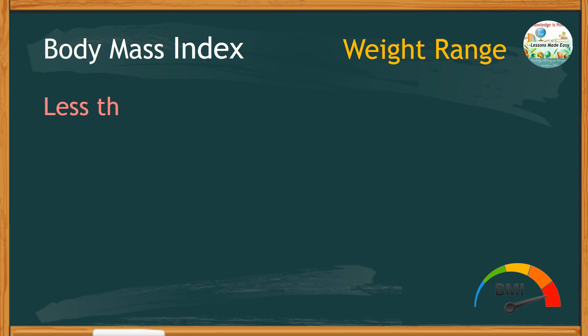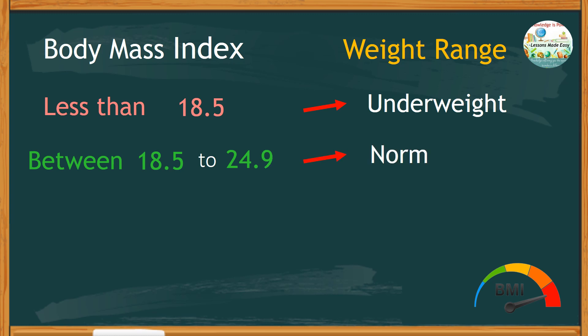Your BMI is important because you'll get to know if you are at a healthy weight. Let's look at the chart of the body mass index in relation to the weight range. A BMI below 18.5 means a person is underweight. A BMI between 18.5 to 24.9 means a person's weight is normal.